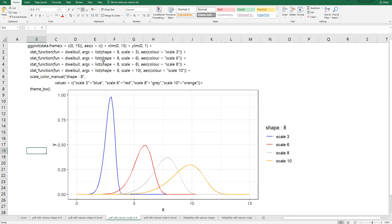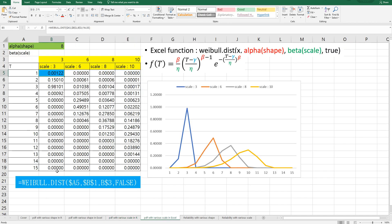We also can draw this graph in R and Excel. In R program, as you can see, we can use dweibull function. Then you can draw this graph in R. And in Excel, you can draw the same graph. And this is main Excel formula.